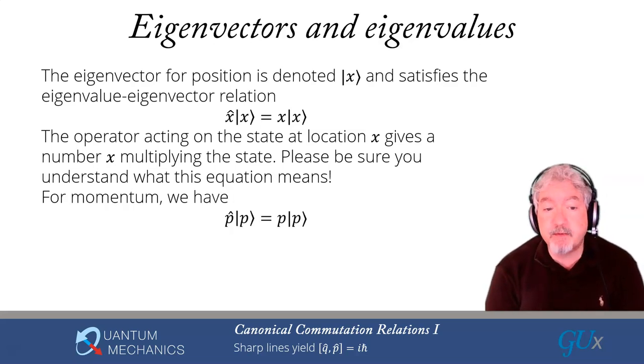For momentum, we of course have a very similar relationship. The momentum operator acting on the momentum ket is equal to a number, which is the value of the momentum multiplied by that same ket, and we're using the label p that corresponds to the value of momentum to label the ket. This is actually very common that we use the same label in the ket as the value of the eigenvalue of the operator, when we have this eigenvalue-eigenvector relationship.